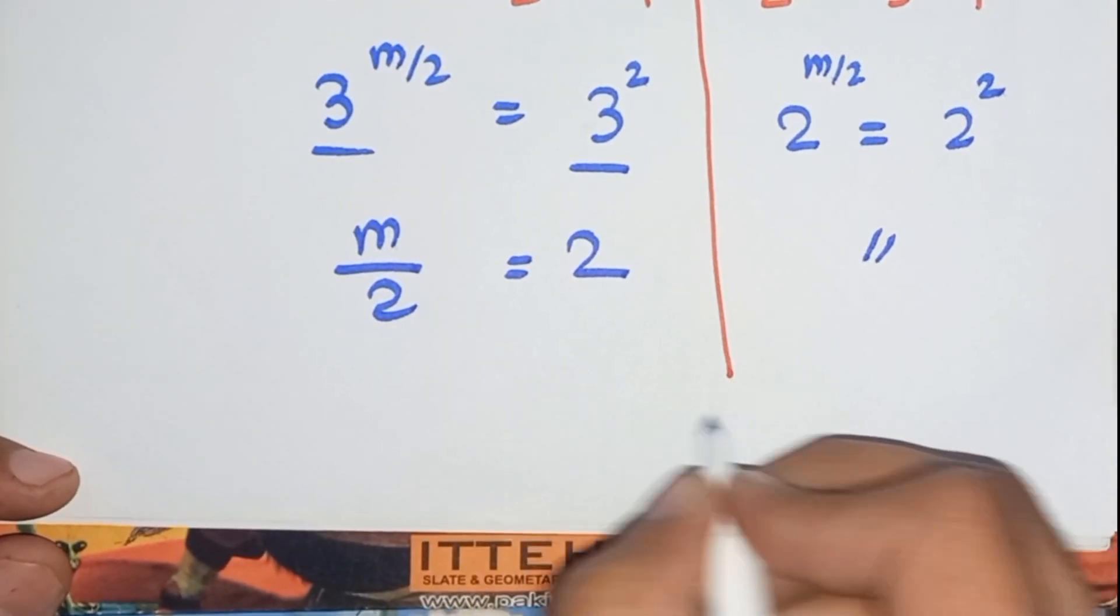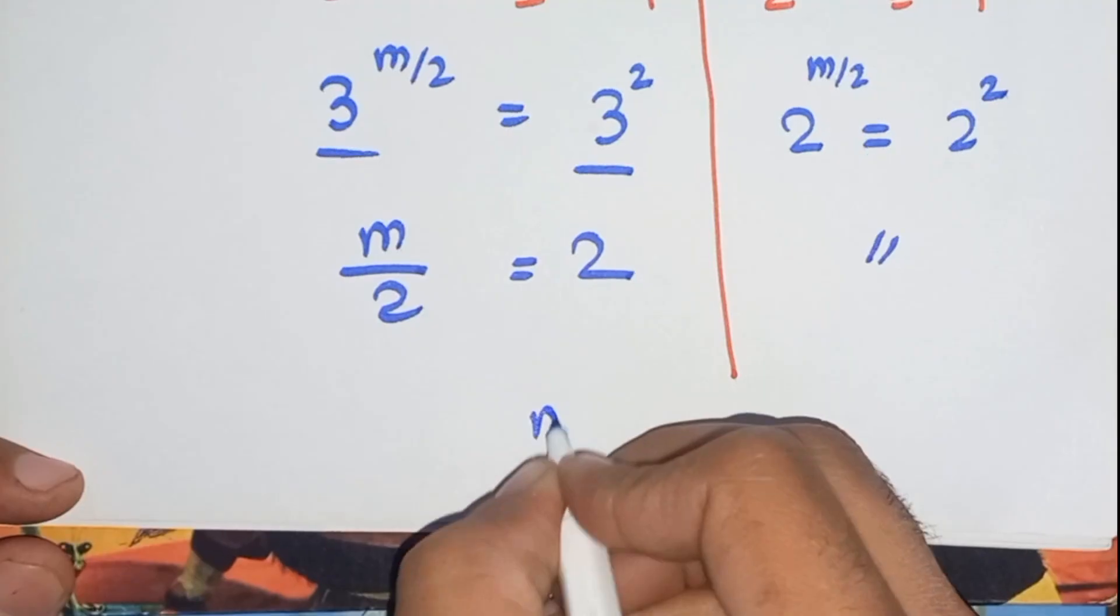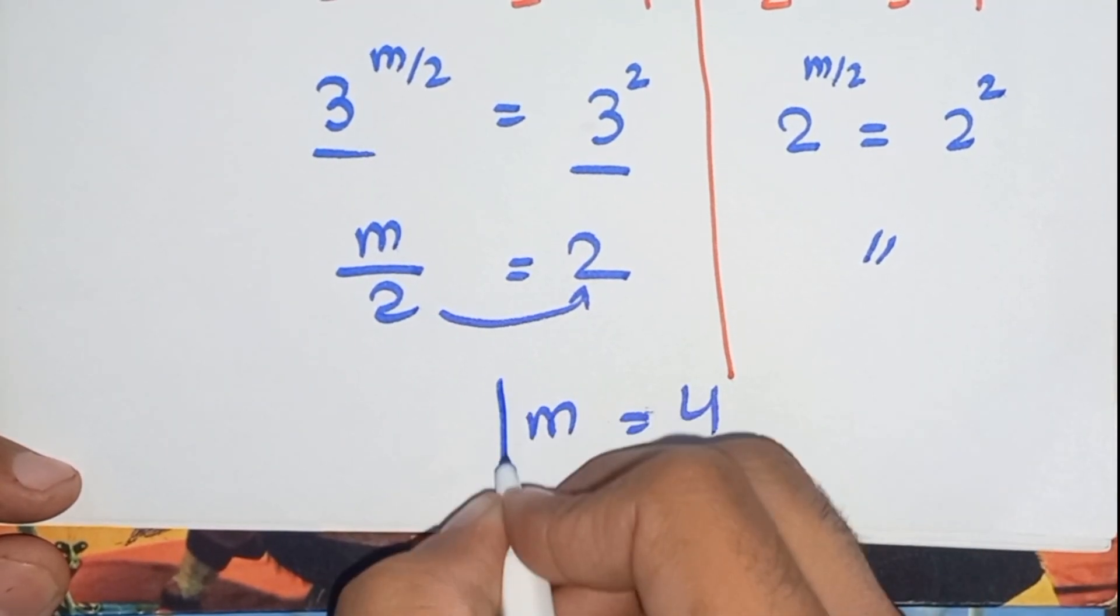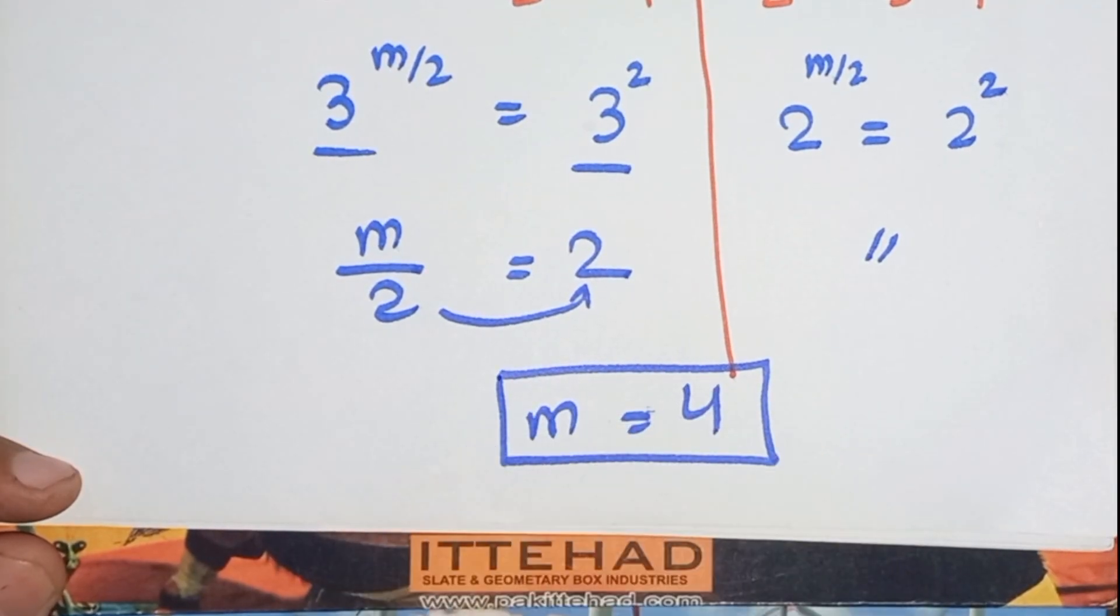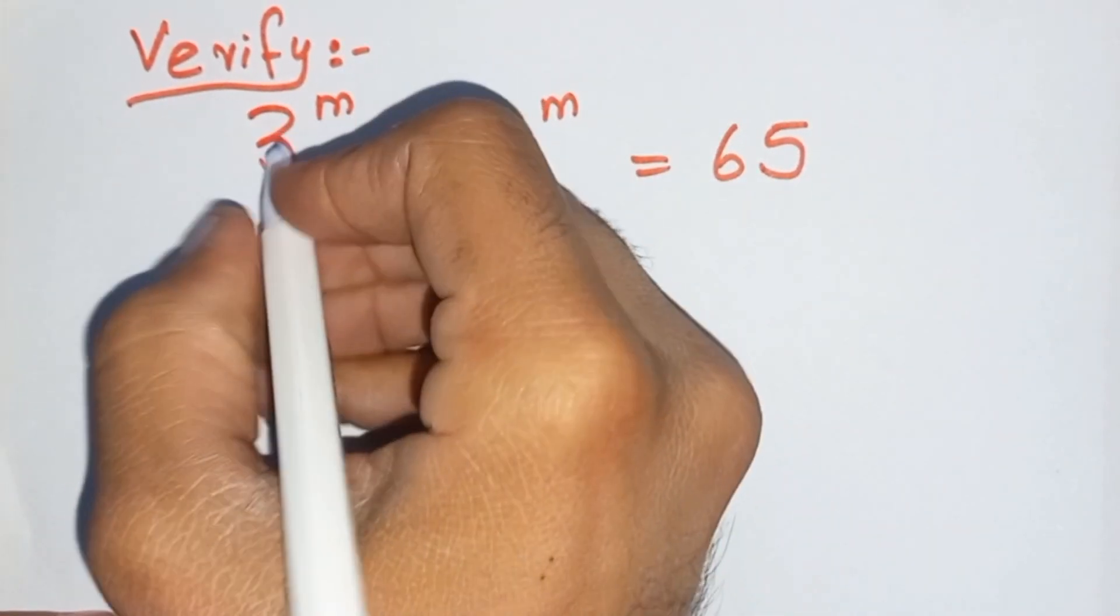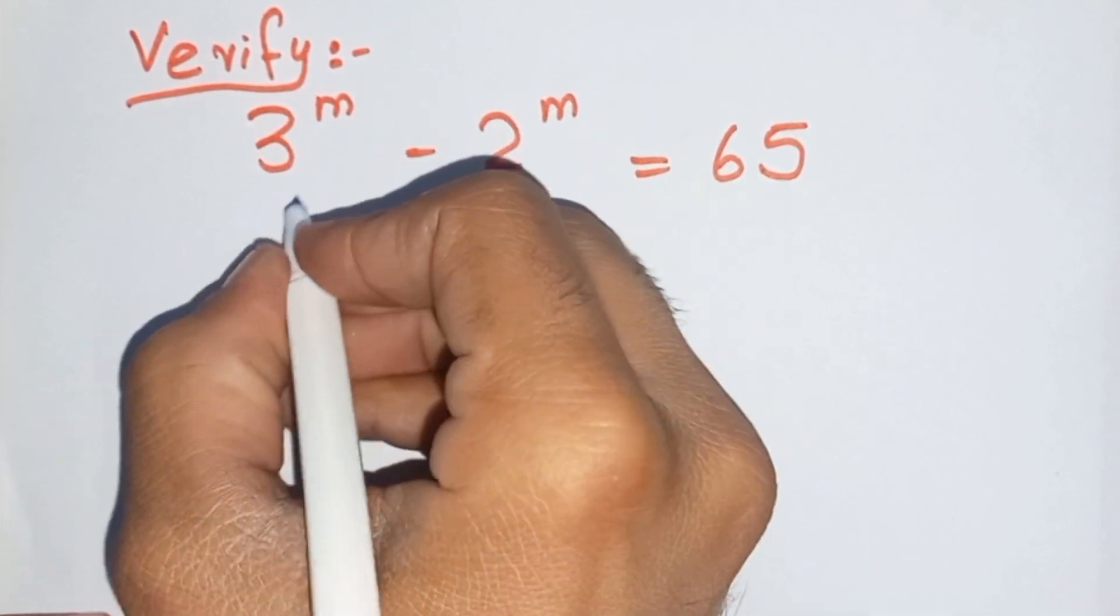So now m equals, multiply it here, m equals 4. Now check to verify the equation, put the value of m equals 4.